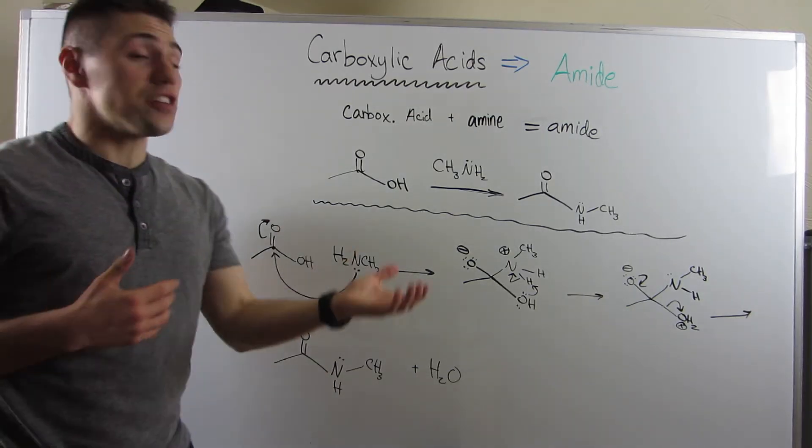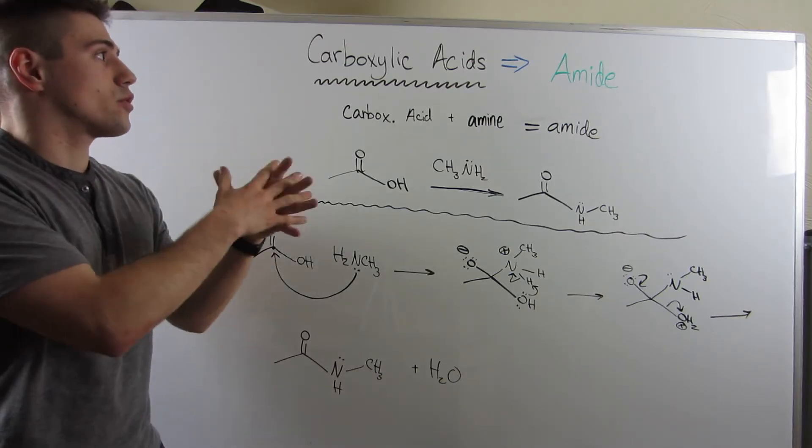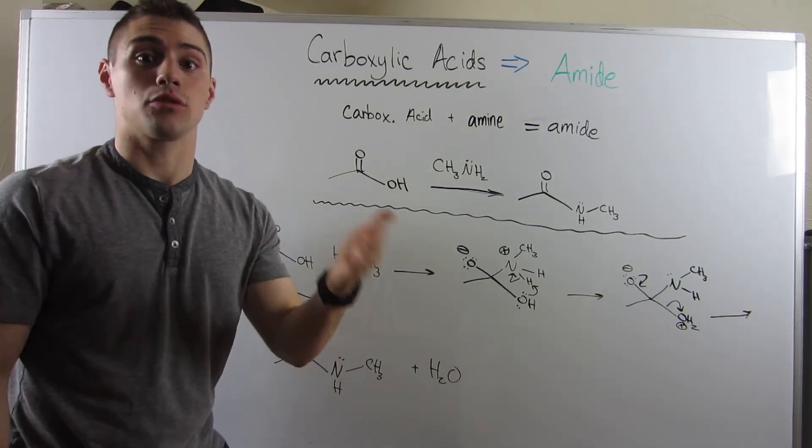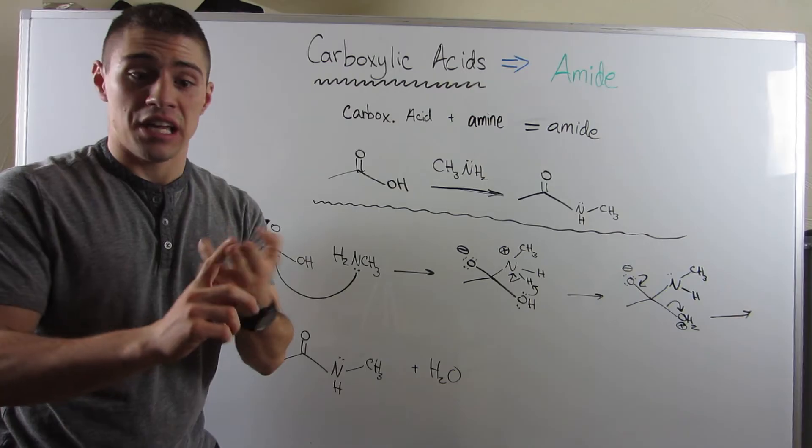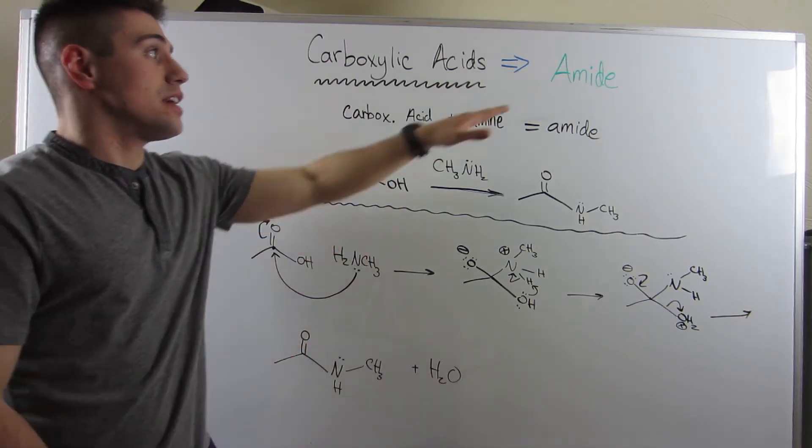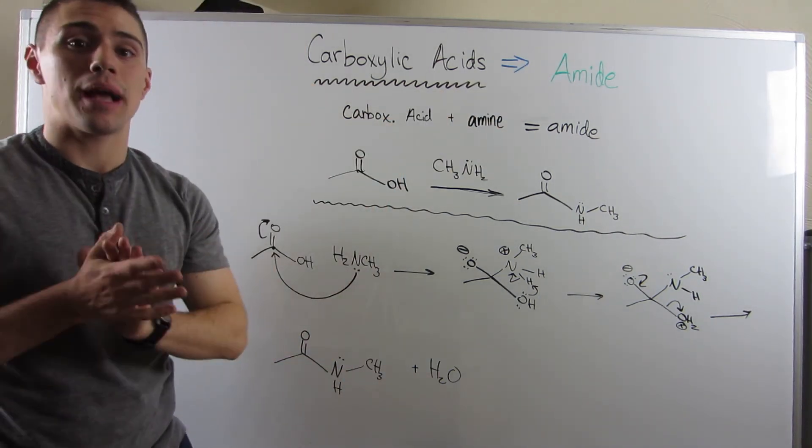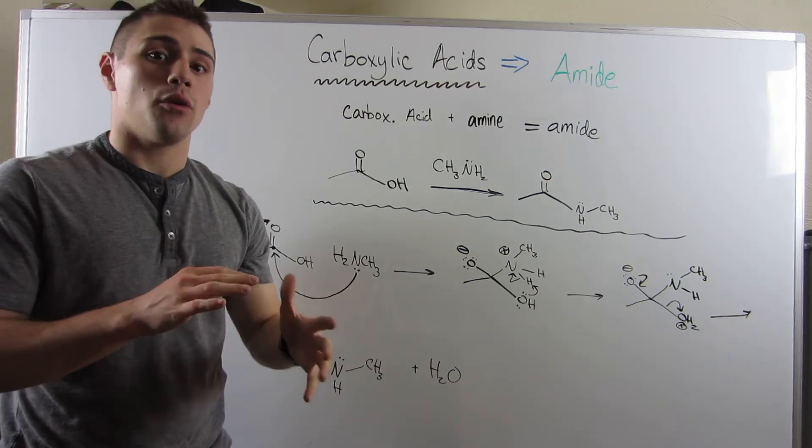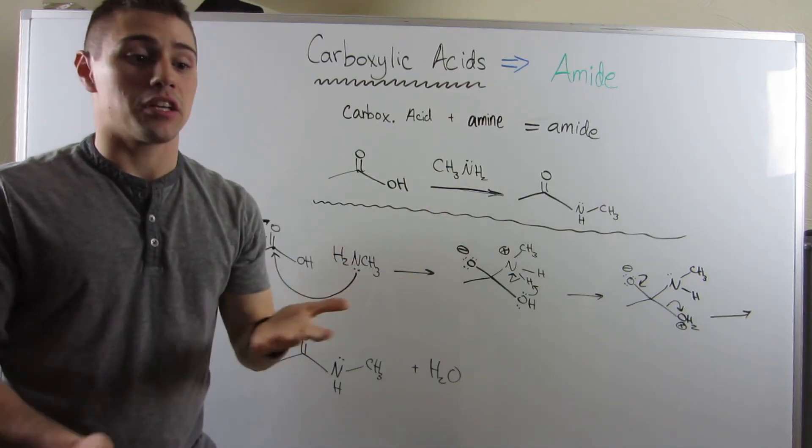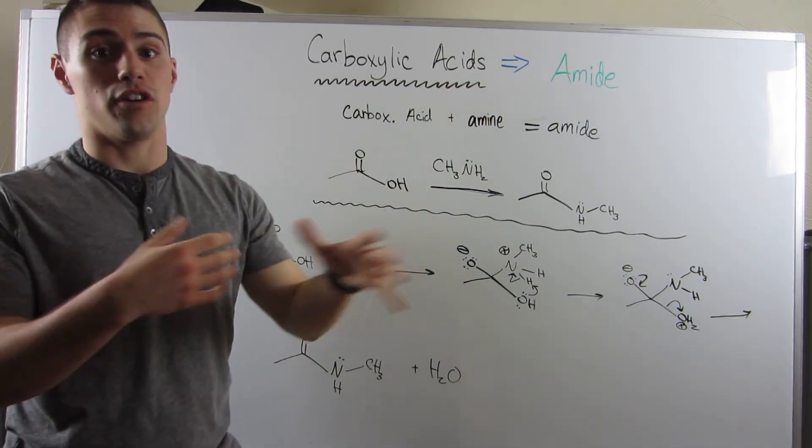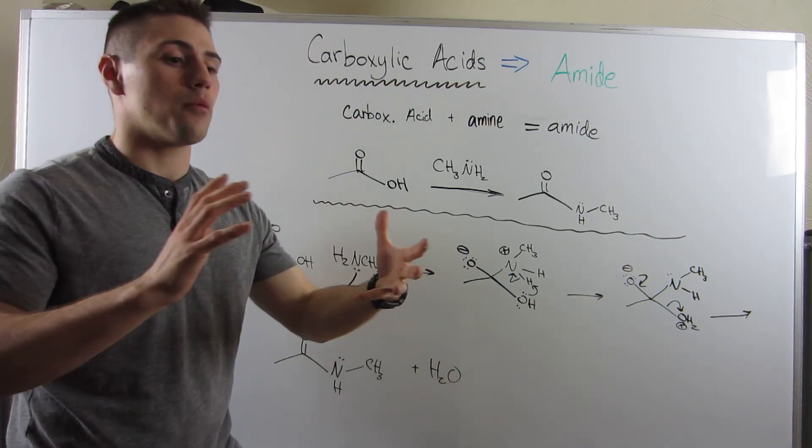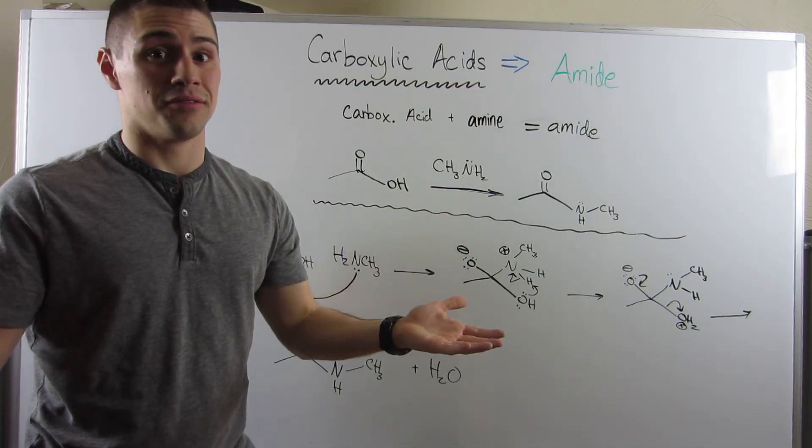That does it for all the mechanisms associated with transforming carboxylic acids into other things, such as acid halides—acid chlorides, acid bromides—esters, and, blanking, acid anhydrides, and in this case, amides. That pretty much wraps it up for carboxylic acids. Moving forward into the next series, we're going to take a look at the functional groups I just mentioned because there's a lot of chemistry to do with those functional groups. But as you'll see, it's nothing really new. We're just going to apply what we know in different scenarios. See you guys later.